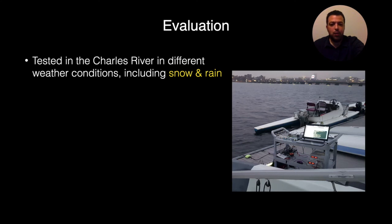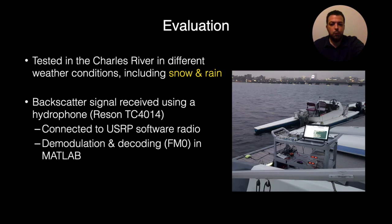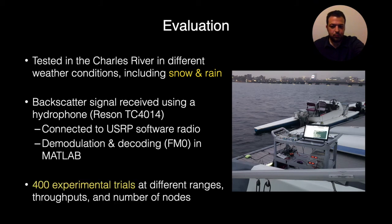For our evaluation, we performed our experiment in the Charles River in different weather conditions such as snow and rain. And also, we used hydrophone Reson TC4014 to receive the signal. And this hydrophone was connected to the USRP software radio. And at the end, we demodulate the signal and decode using FM0 in MATLAB. In total, we ran over 400 experimental trials at different range, throughput, and number of nodes. Now, I want to just present you two of our main results. And for the rest of the results, I would like to invite you to read the paper.